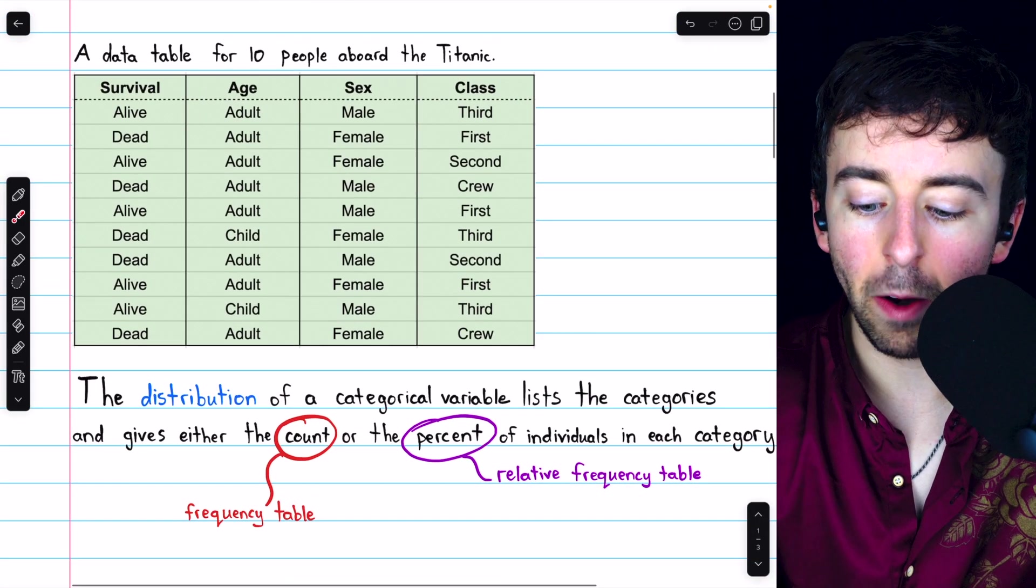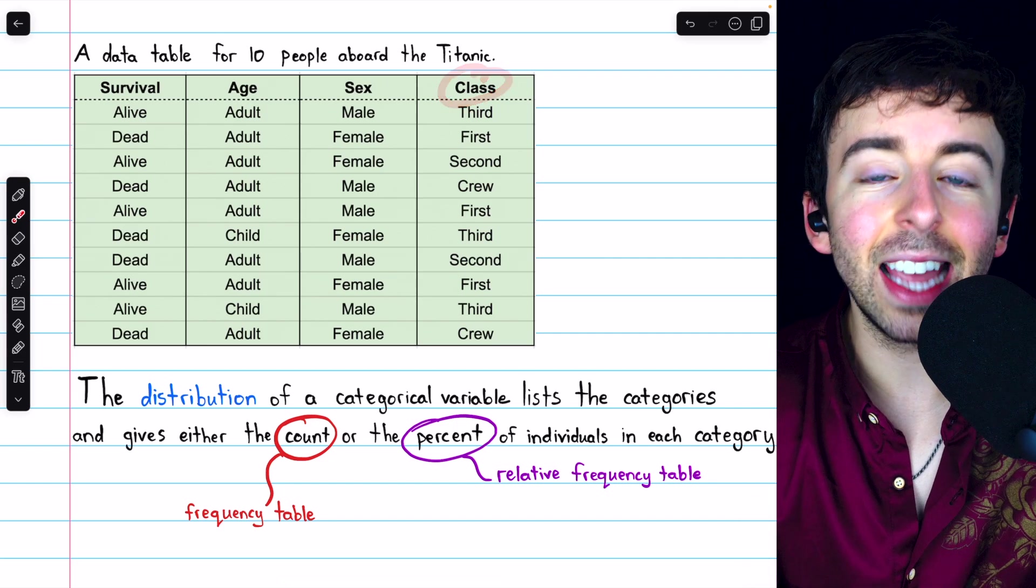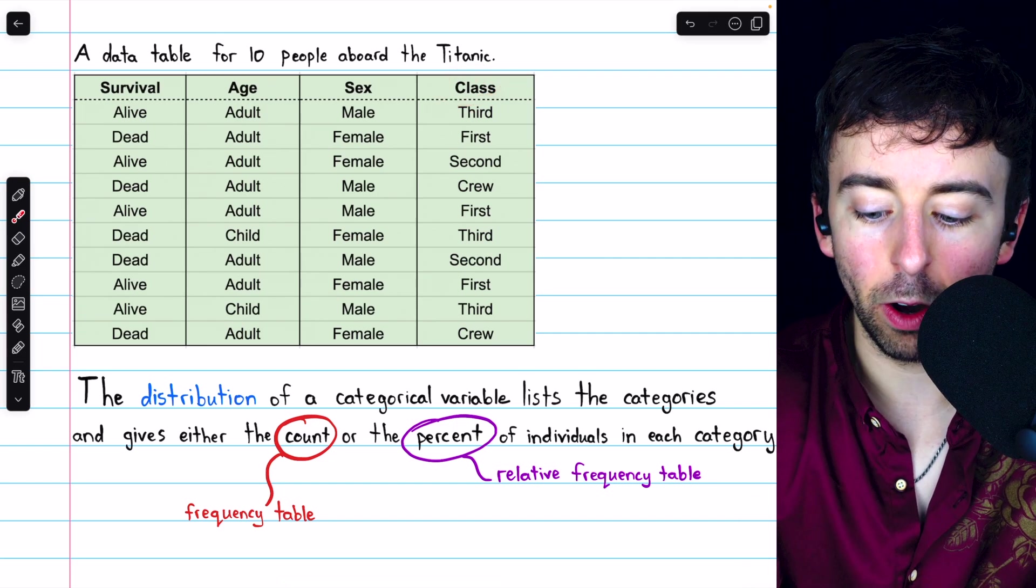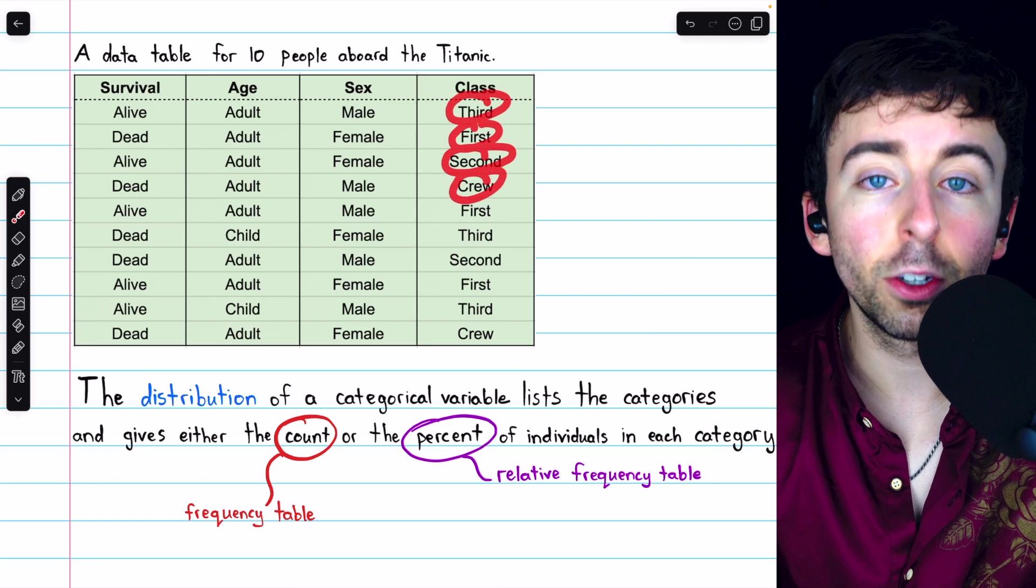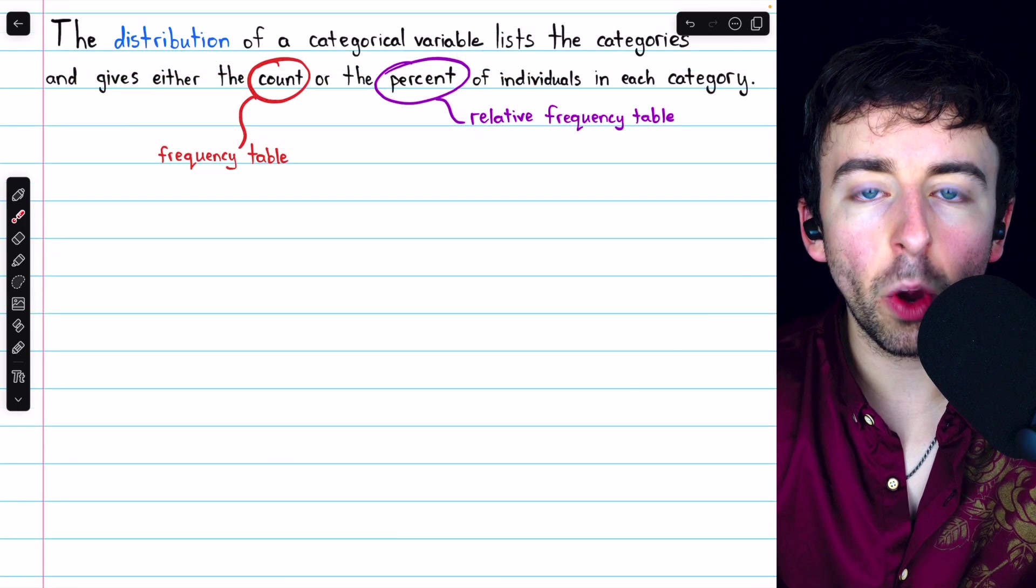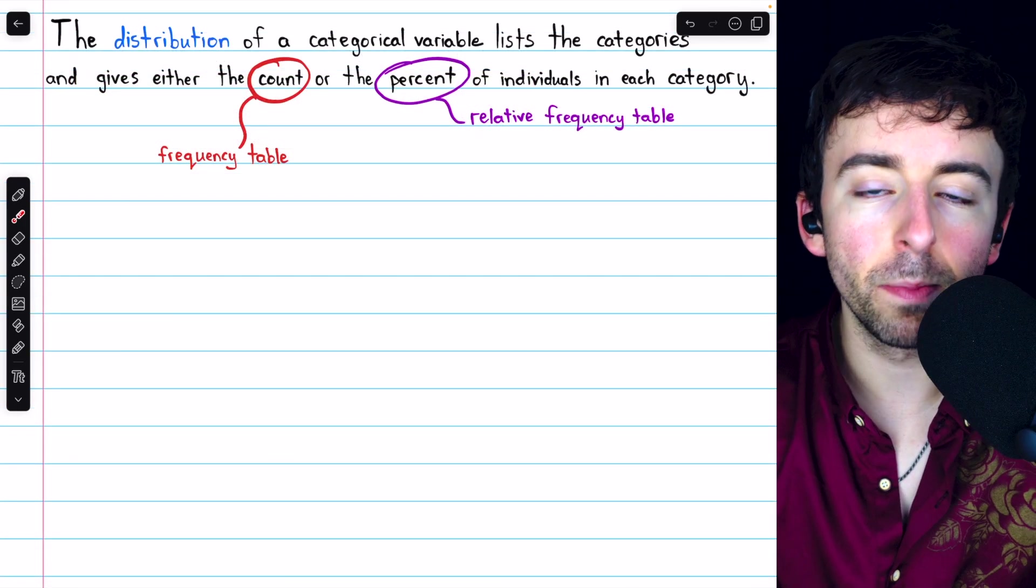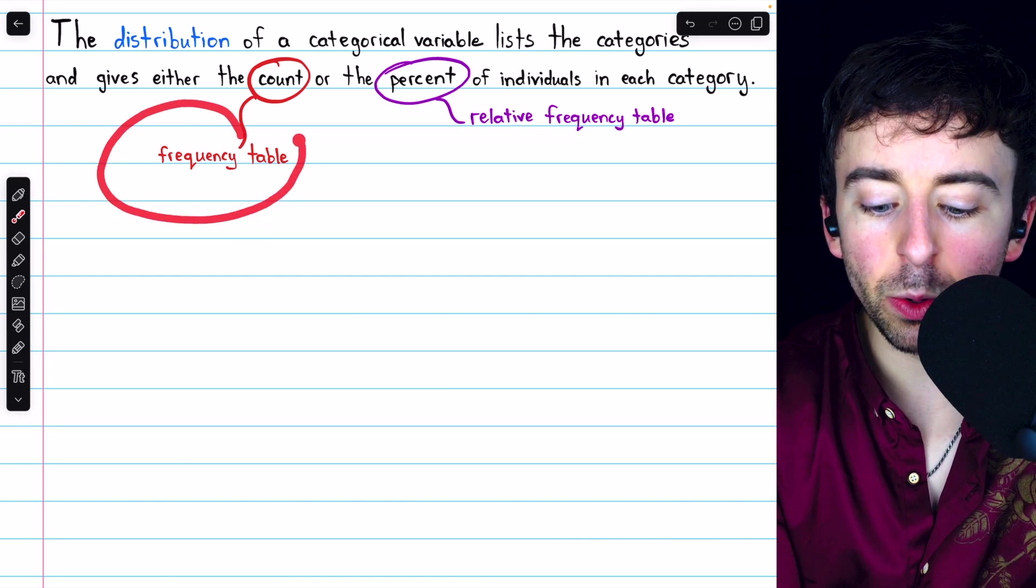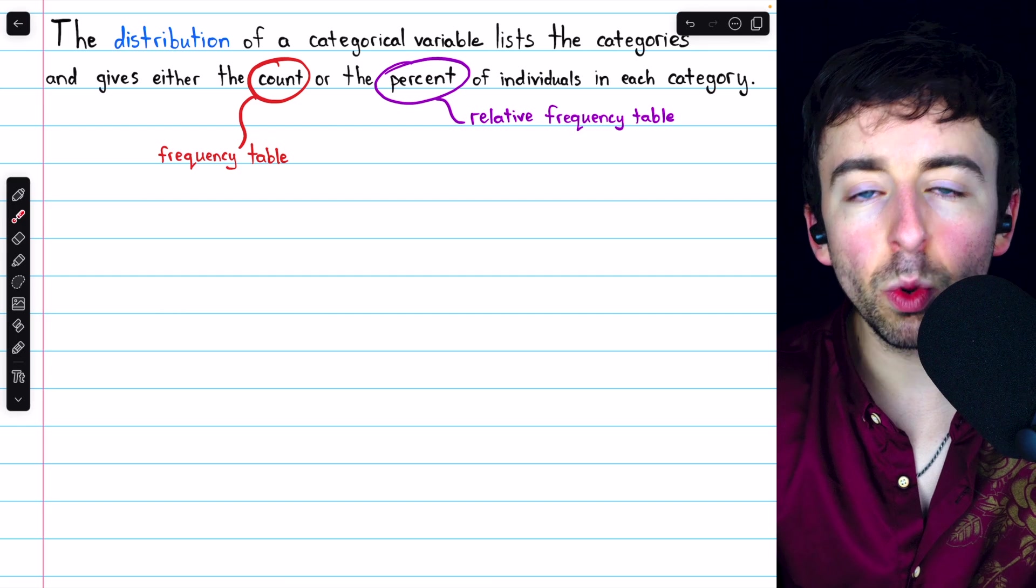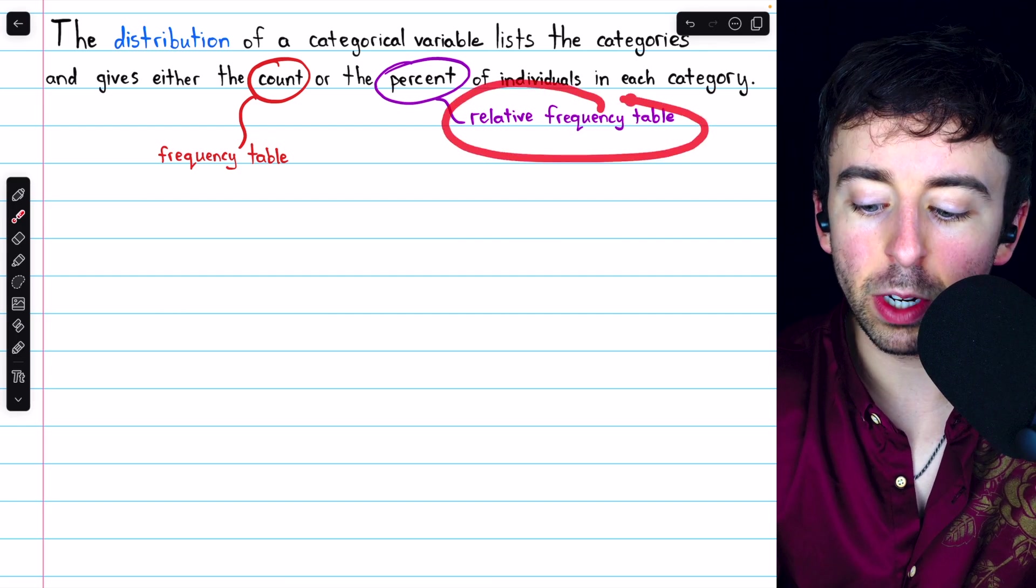The distribution of a categorical variable lists the categories that the variable takes on and gives either the count or the percent of individuals in each of those categories. For example, one of our categorical variables is class. The categories are first class, second class, third class, and crew. So we could make a table showing the numbers of people on board the Titanic who belong to each class. That would be a frequency table.